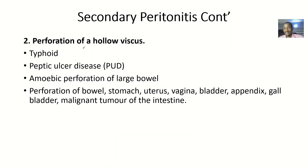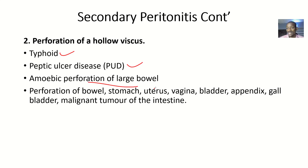Perforation of a viscus is another cause. Most organs have their contents — the gallbladder, pancreas, and stomach all have contents. If there is any perforation, these contents can leak into the abdominal cavity, affecting the peritoneum. Perforations can include typhoid perforation, peptic ulcer perforation, amoebic perforation of the large bowel, perforation of the bowel, stomach, uterus, vagina, bladder, appendix, gallbladder, or a malignant tumor of the intestines.